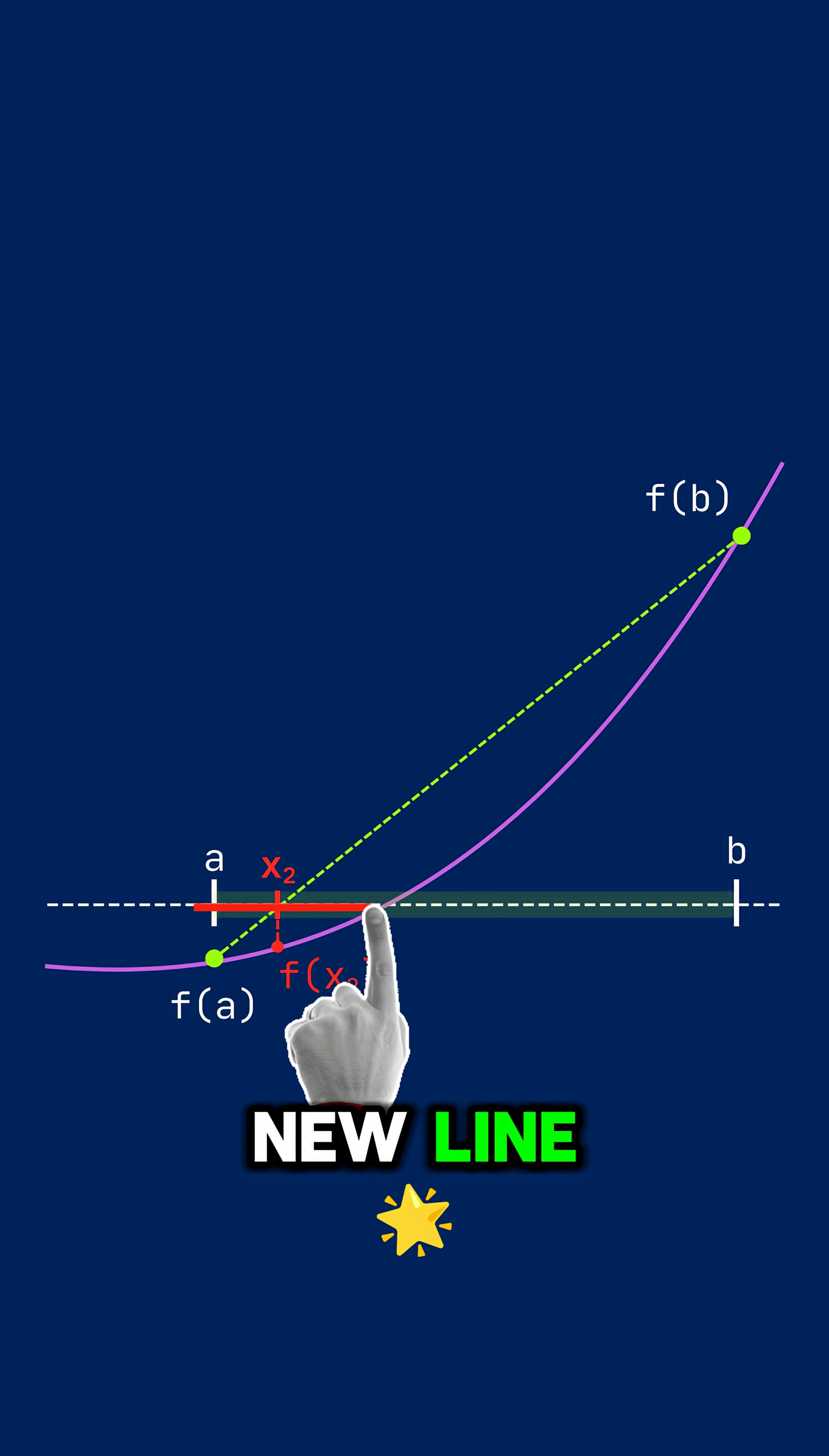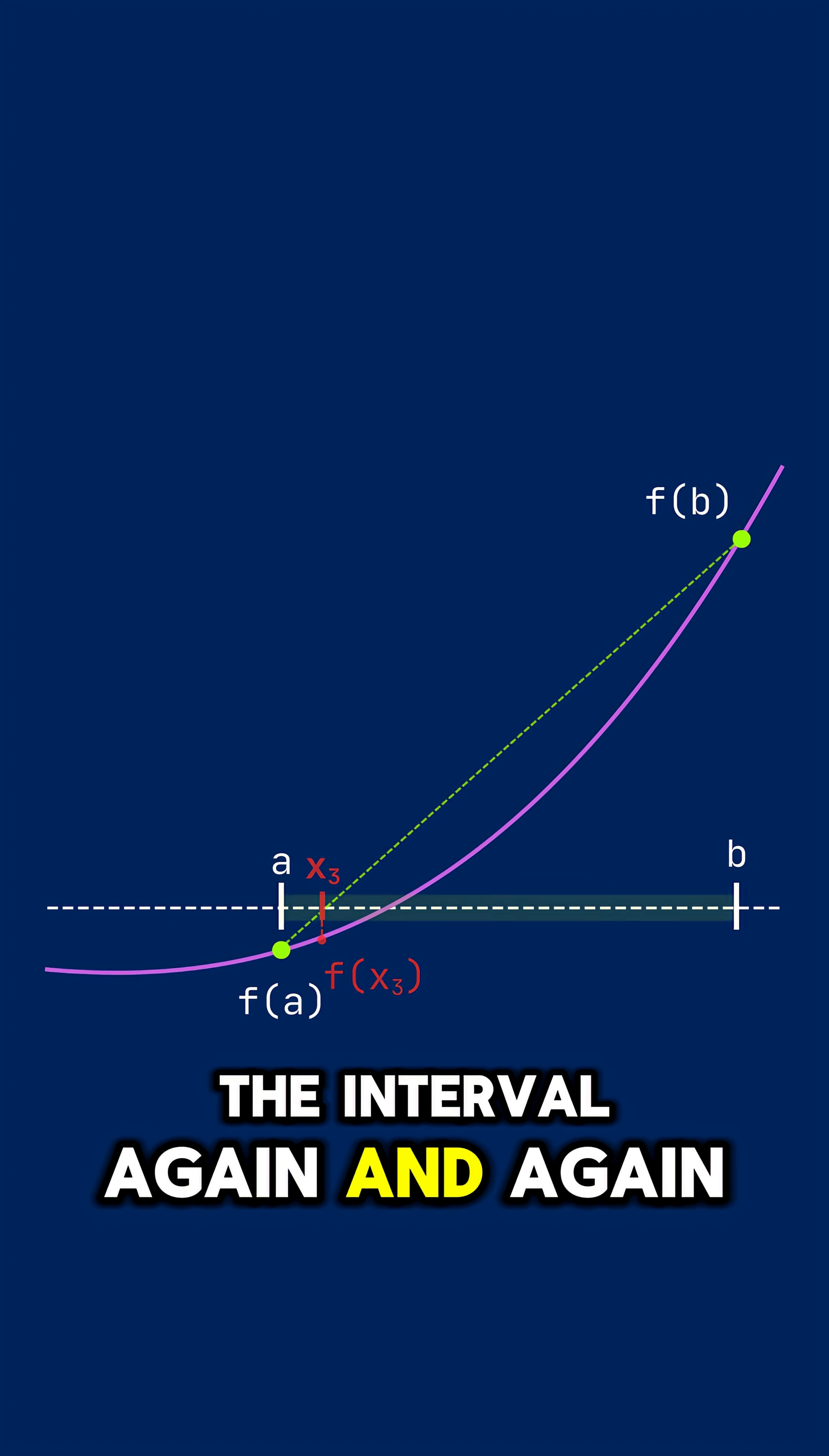Repeat the process. Draw a new line, find the intersection, shrink the interval again and again and again.